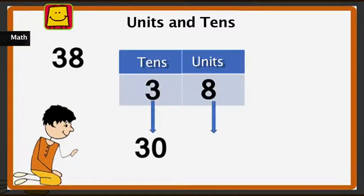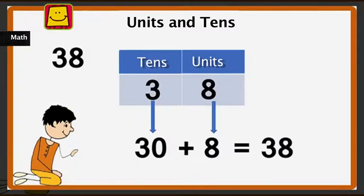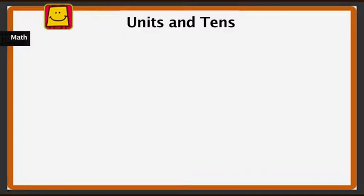So we have three tens: 10, 20, 30. There is 8 in the units place, which is 8. When we add 30 and 8 we get 38.